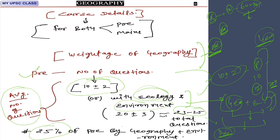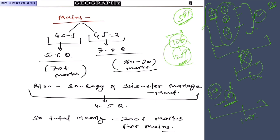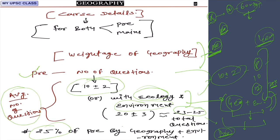Out of 100 questions in the paper, 25 come from geography. As we saw in those three videos, the average cutoff for pre-selection or qualifying for mains is also below 50 percent, or maximum 50 percent. So these two subjects — ecology, environment, and geography — are covering 25 percent of 100 questions, which makes them extremely important.